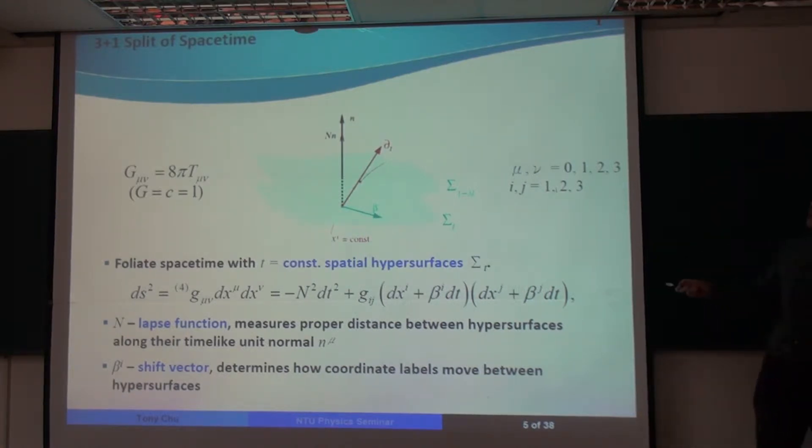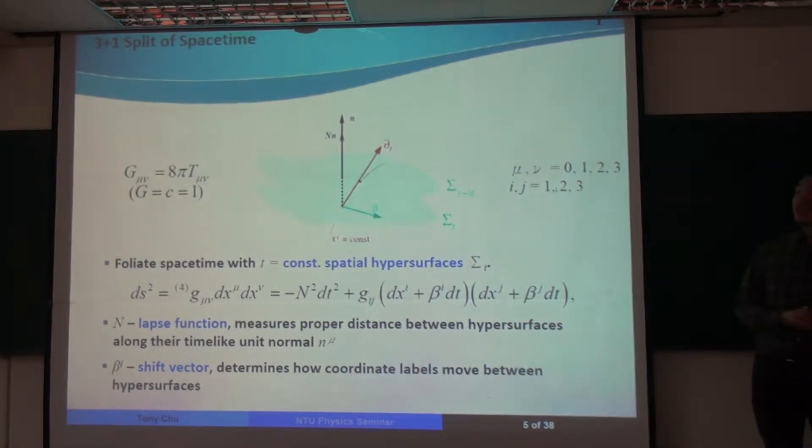So these are the familiar Einstein's equations. In numerical relativity, we typically use geometric units, in which the gravitational constant and the speed of light are set to unity.